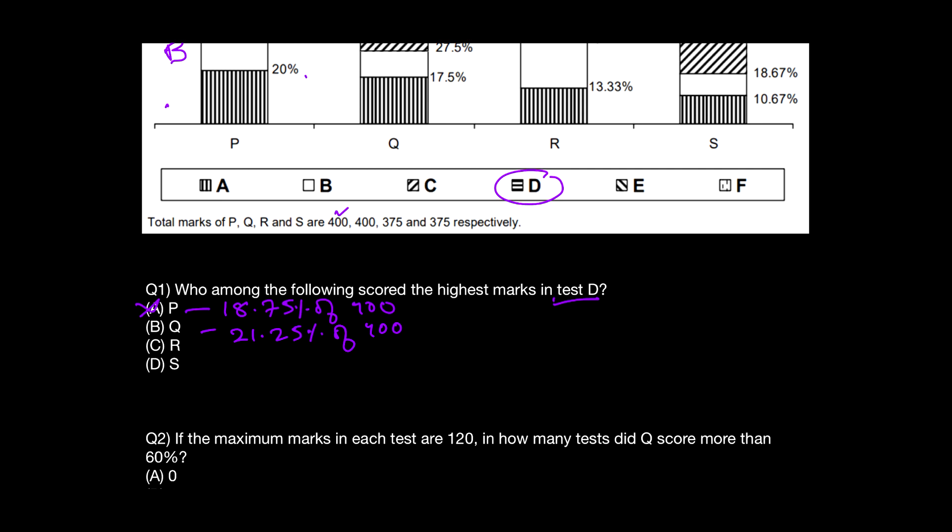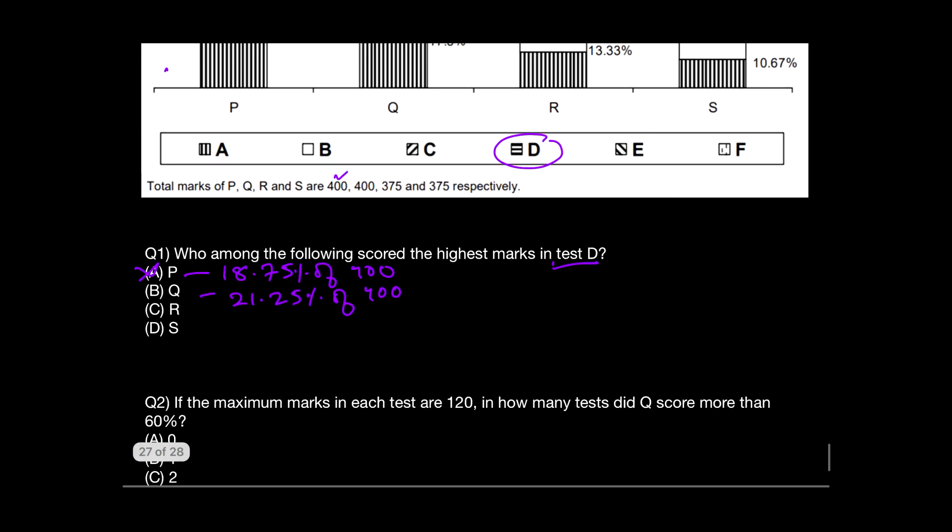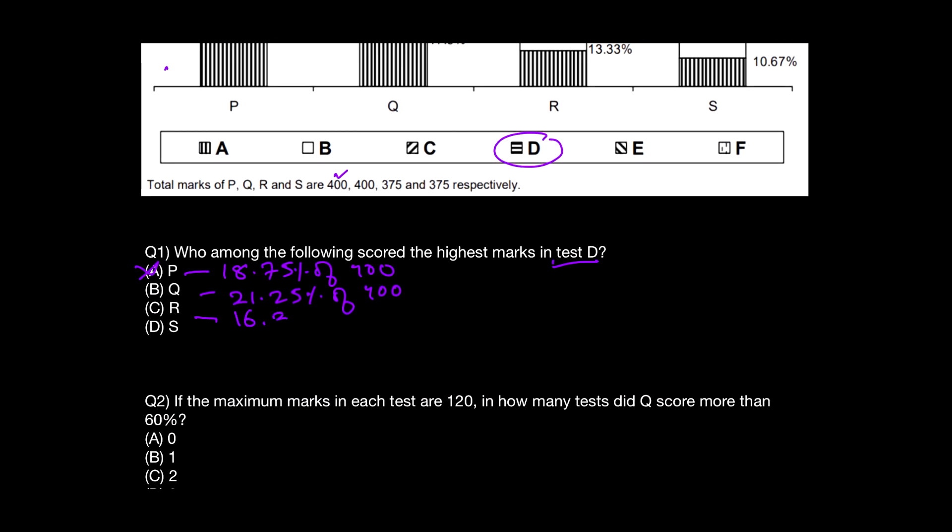Now we will check for R and S. The difference between R and S is going to be 60 minus 40 is 20, and 20 minus 4 is 16. So 16.33% of the number 375. Look at this comparison. Without solving, can you make a decision? The base number is smaller than 400. If I compare Q and R, the base number is smaller than the previous number, and at the same time the percentage value is also smaller. So it's quite obvious that this number is going to be less than Q. So R is also gone.